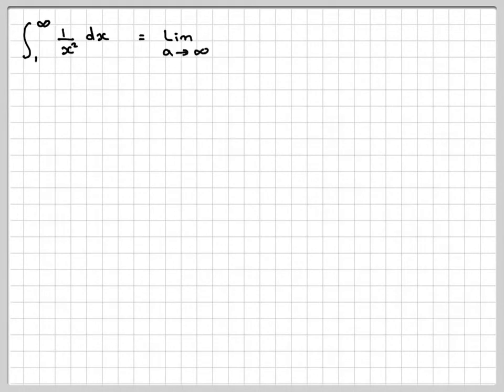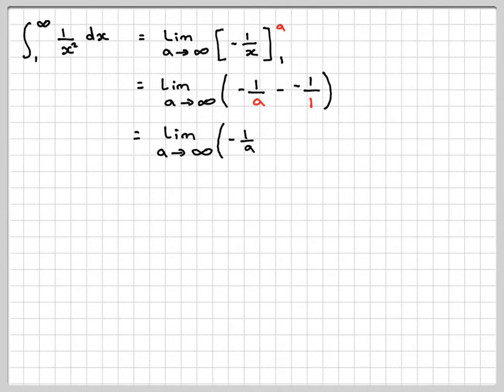So just writing that last line out again, we do the limit as a goes to infinity of minus 1 over a minus minus 1 over 1, which gives me the limit of minus 1 over a plus 1.